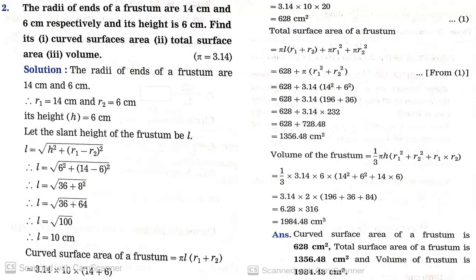Question 2. The radii of the ends of a frustum are 14 cm and 6 cm respectively, and its height is 6 cm. Find its curved surface area, total surface area, and volume. Pi = 3.14. So R1 = 14 cm (bigger), R2 = 6 cm, and height H = 6 cm. Let the slant height be L.